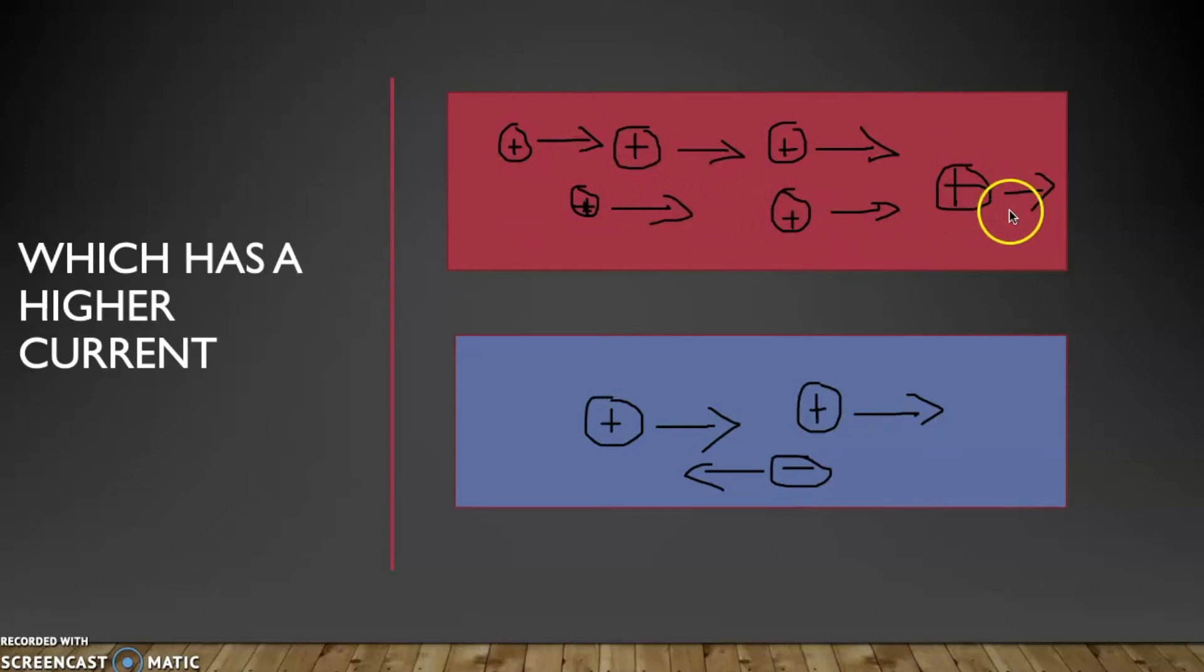Because we have several positive charges flowing all in one direction, more amount of charges than we have down here in blue, which is only two positive charges and one negative charge, which actually will cancel out our positive charge. Now we're going to watch a wonderful experiment of how currents happen.